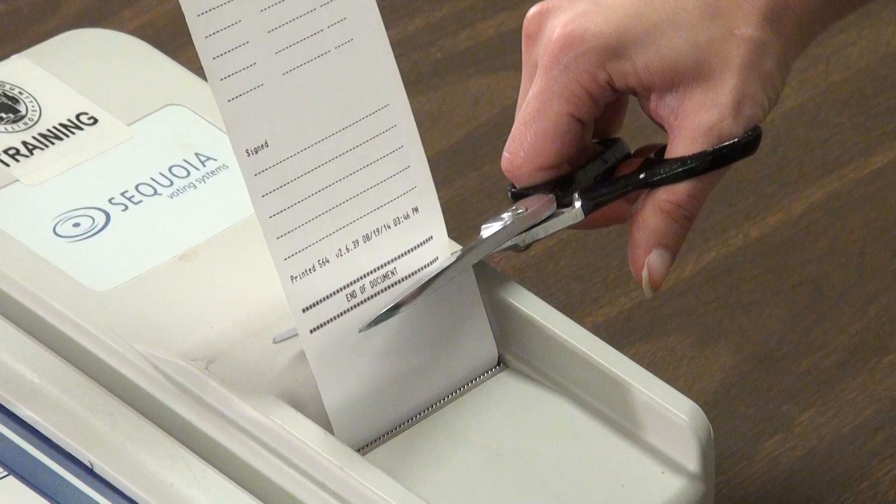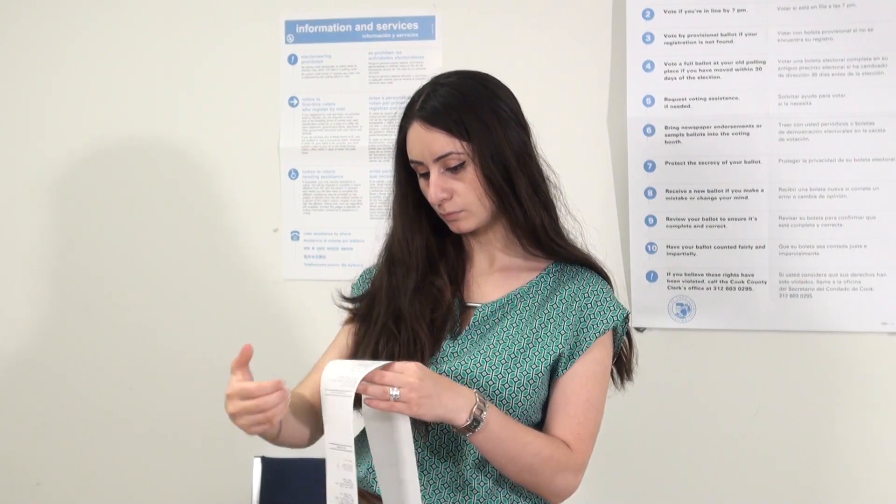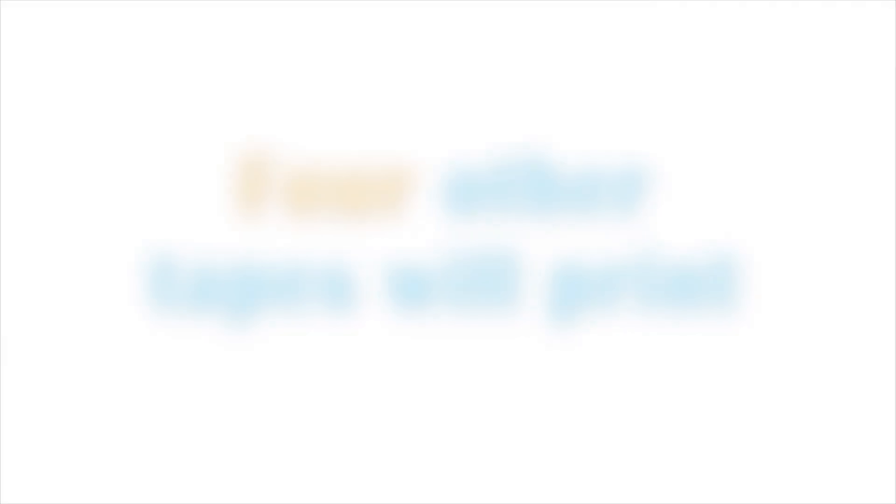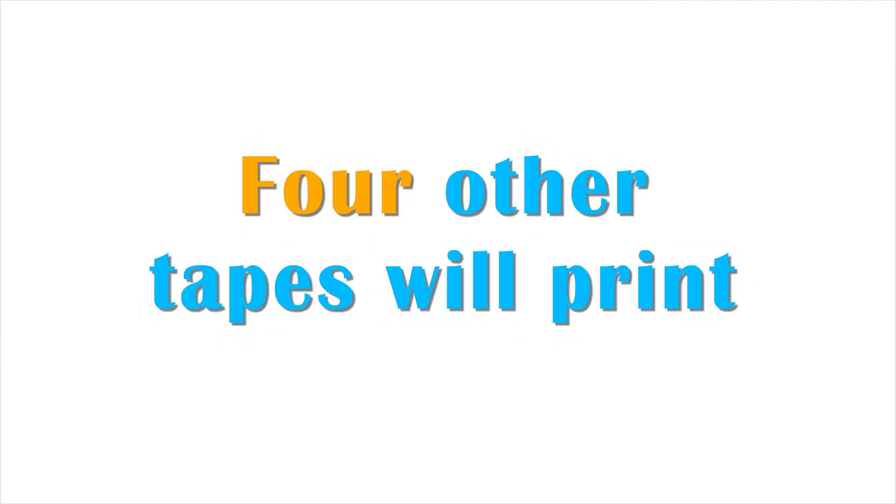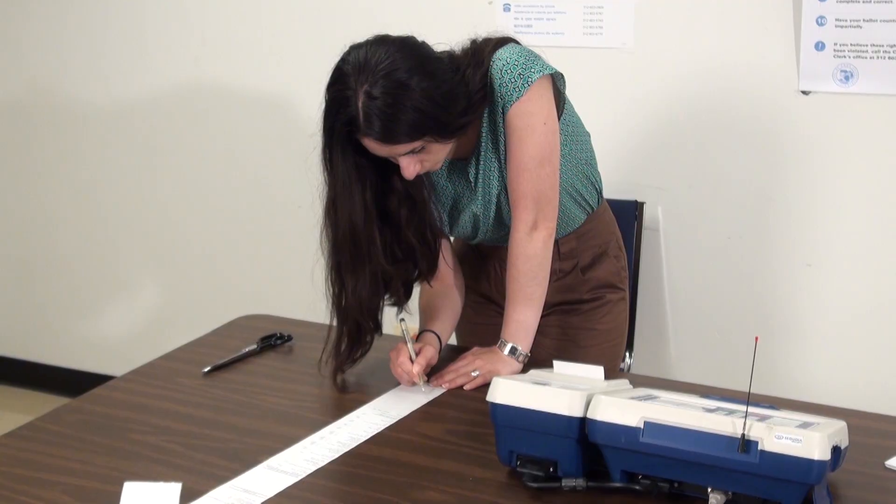Cut the first tape from the machine after the signature lines. This tape must have the consolidation and transmission tapes attached to the results. There will be four other results tapes that will automatically print. All judges must sign all copies.